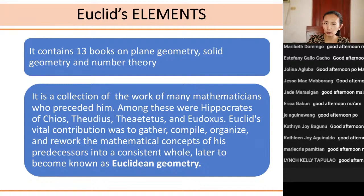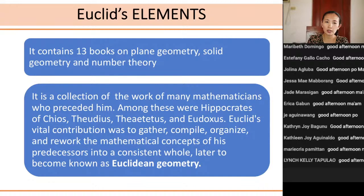Just a review — you took this before. Euclid's Elements contains 13 books on several areas of mathematics, particularly plane geometry, solid geometry, and number theory. It is in fact a collection of the work of previous mathematicians who preceded him, among these were Hippocrates of Chios, Theodius, Taitetus, Eudoxus. The important contribution of Euclid was simply to gather, compile, organize, and re-work the mathematical concepts of his predecessors into a consistent whole, later to become known as Euclidean geometry.